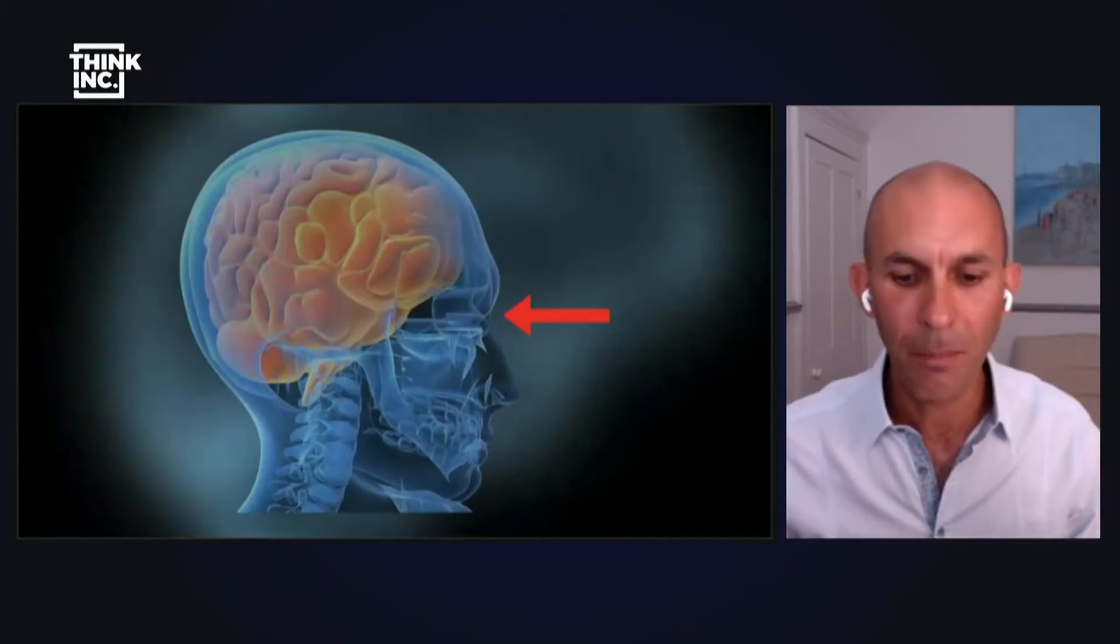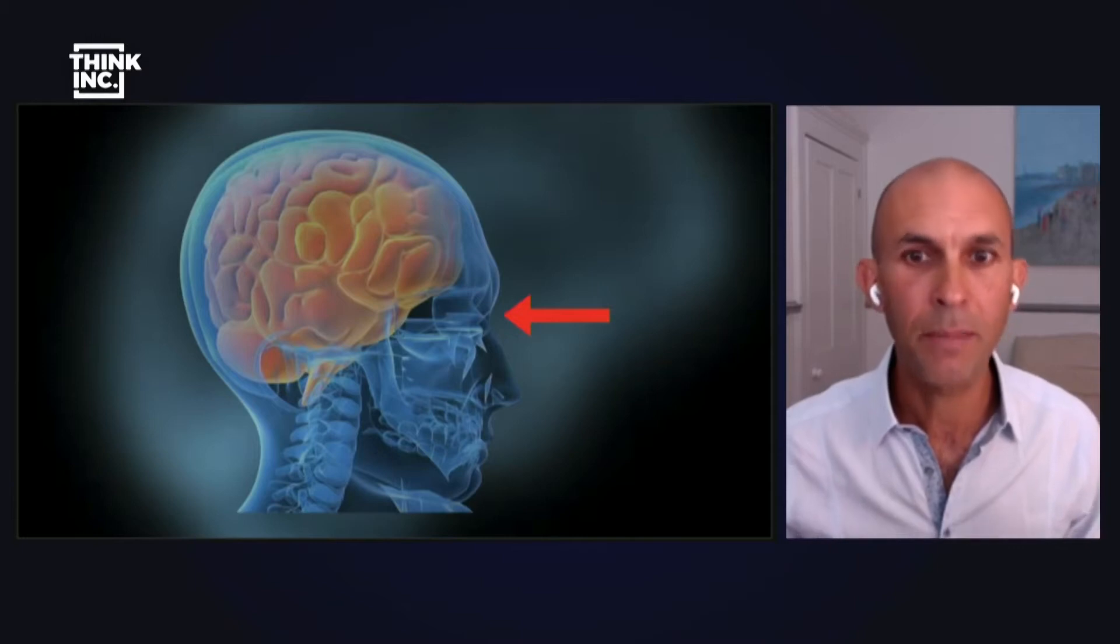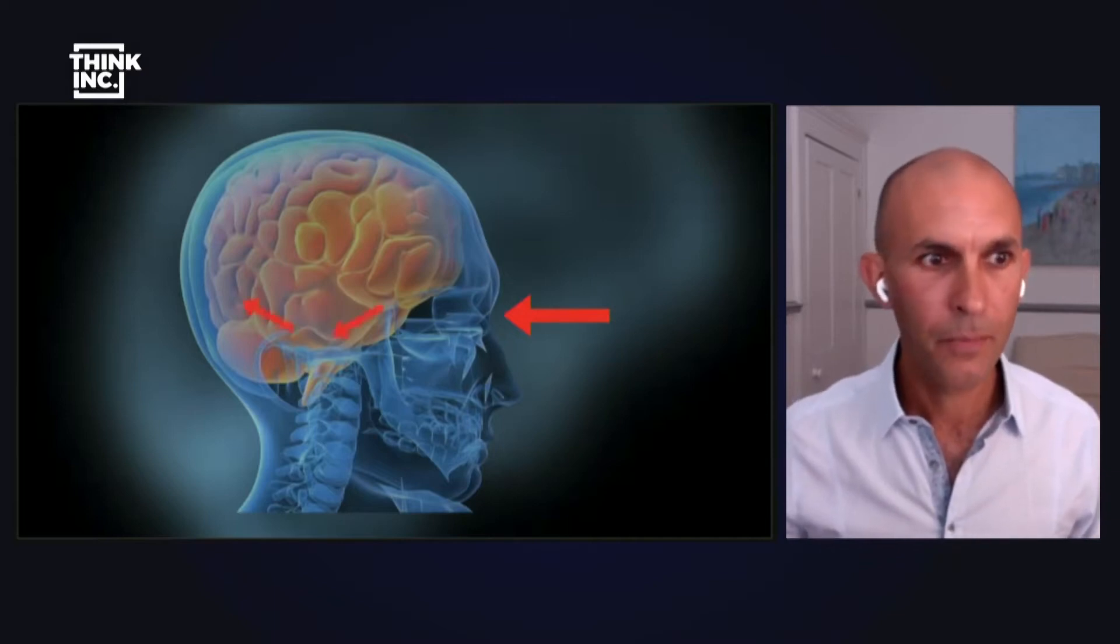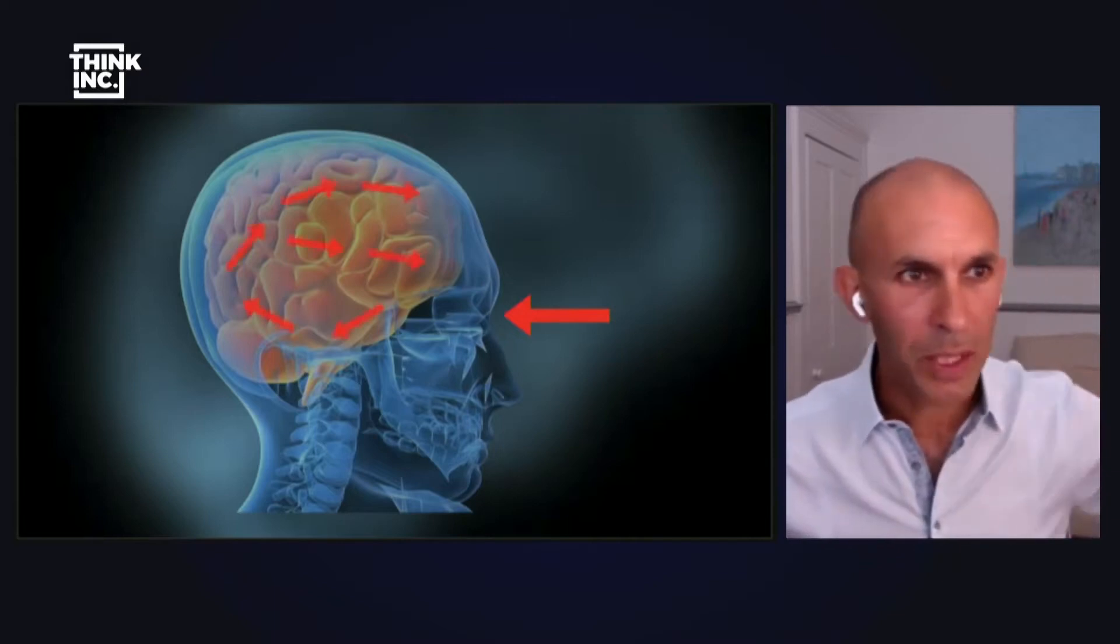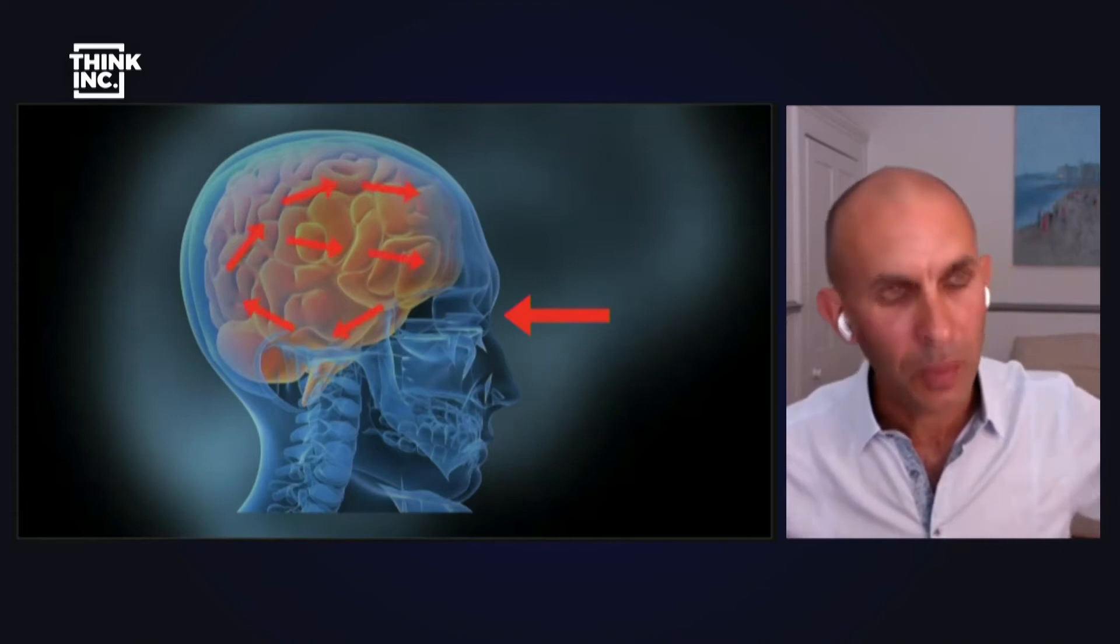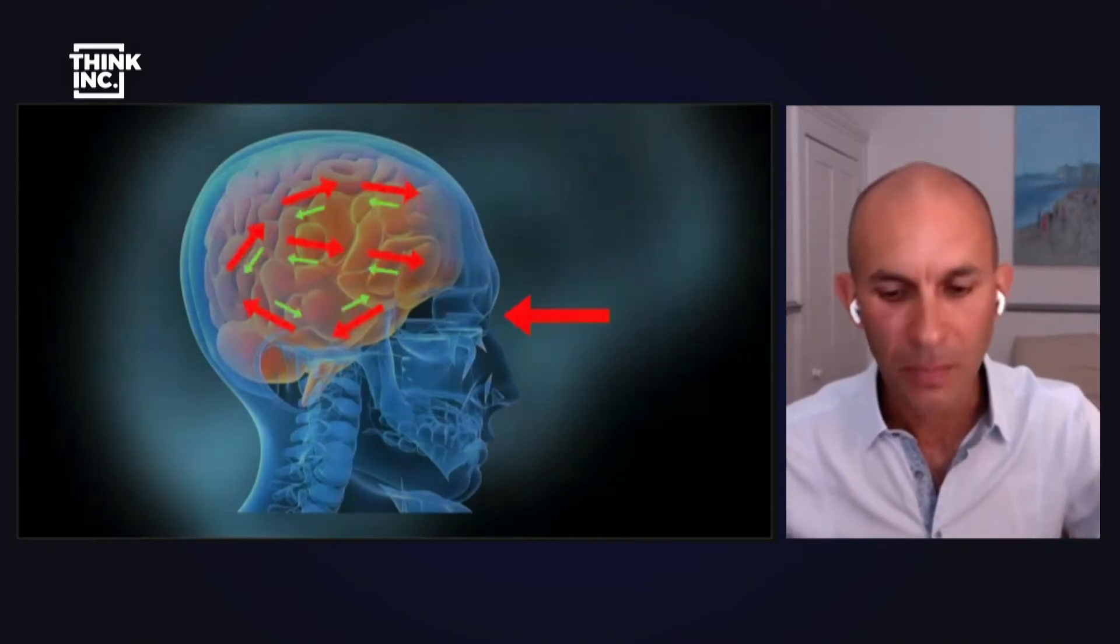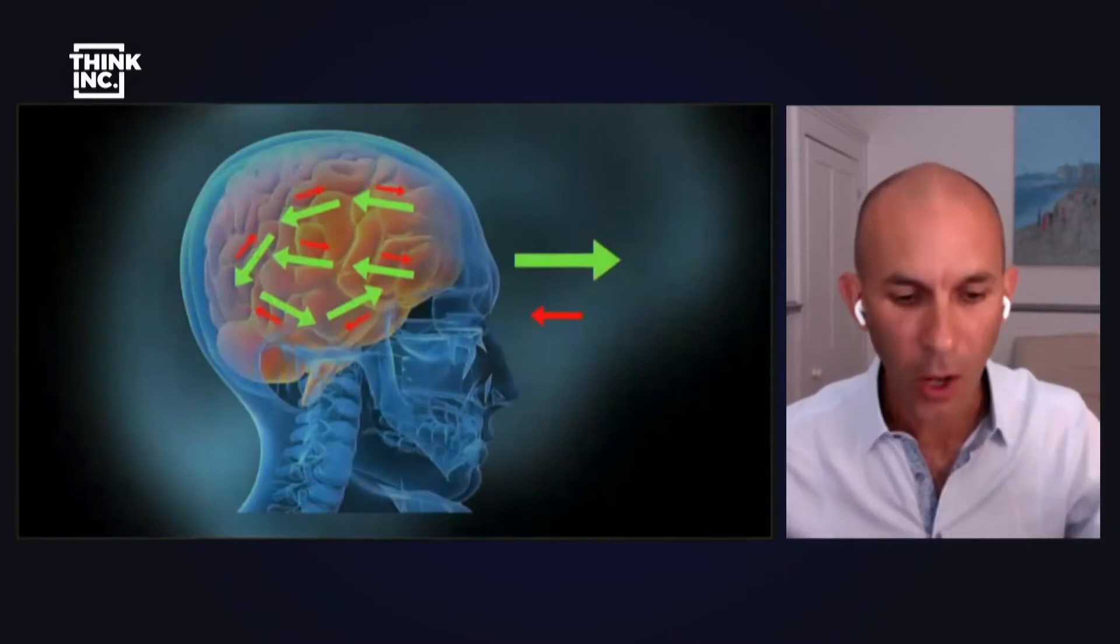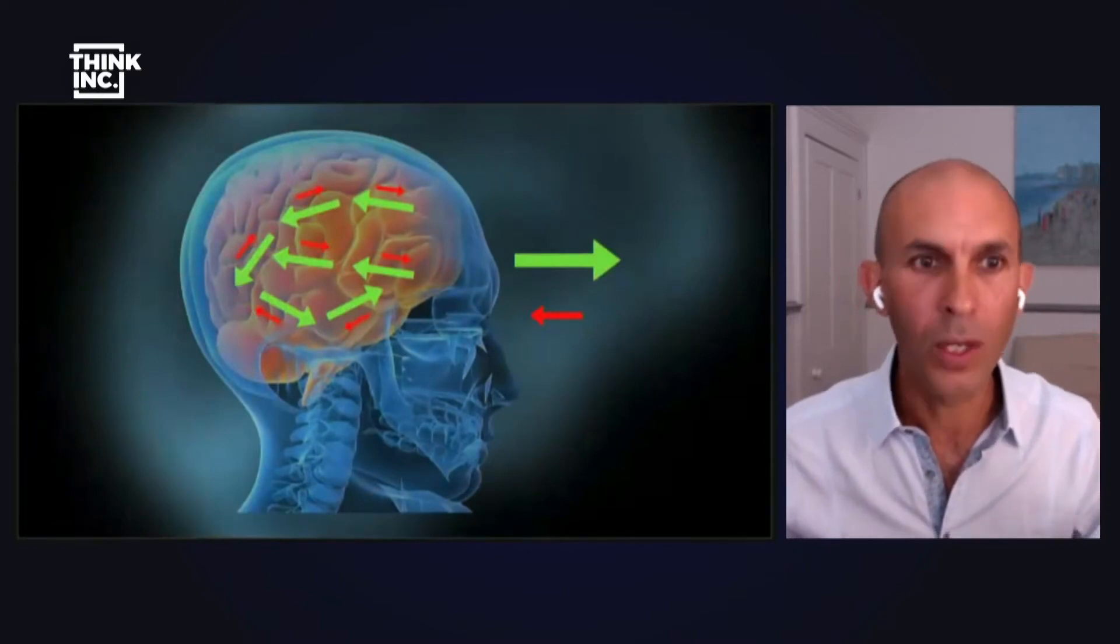Instead of perception depending mainly on signals coming into the brain from the sensory organs, it depends just as much, if not more, on perceptual predictions flowing in the opposite direction. These are the signals coming into the bottom-up view, but from the prediction machine view, perception depends just as much, or probably more, on these predictions that flow from the top down or the inside out.